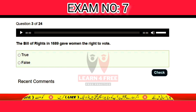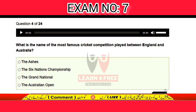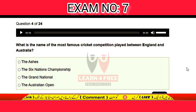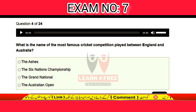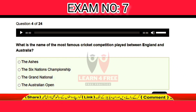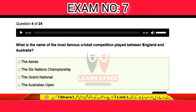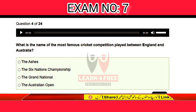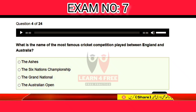The correct answer is false. Question number four: what is the name of the most famous cricket competition played between England and Australia? The options are: The Ashes, The Six Nations Championship, The Grand National, or The Australian Open.